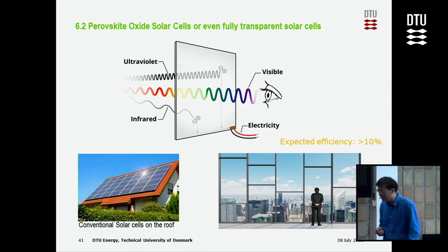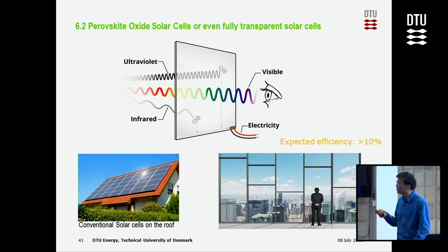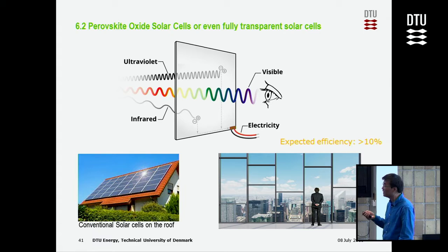Silicon is not only used in computers, it's also used in solar cells and is one of the best solar cell materials. Can we use oxides to build solar cells? It seems possible. Importantly, we could even build a fully transparent solar cell in the future — so instead of putting solar cells only on the roof, every window could be covered and generate electricity. There are currently only two groups in the USA working on this, so hopefully we will be the first in Europe.